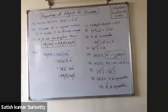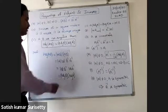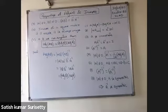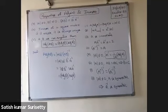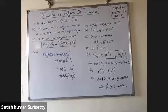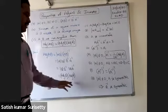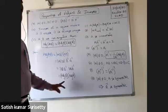You cannot write this as adjoint of A into adjoint of B unless they are commutative, because product of matrices is not always commutative. So you should not write adjoint of AB as adjoint of A into adjoint of B unless it is commutative.